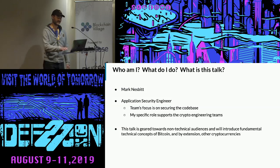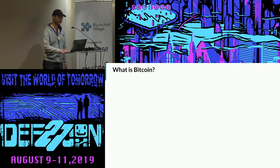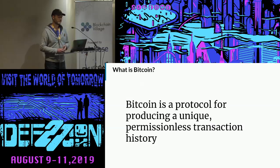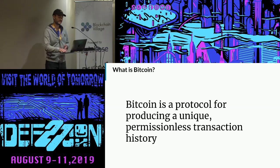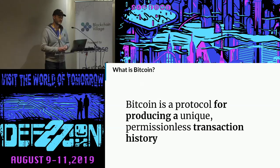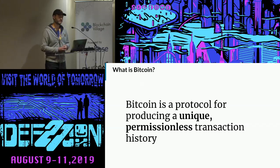Happy to take any questions at the end. So the question: what is Bitcoin? I'm going to provide a definition up front, and we'll spend the rest of the time unpacking that definition and making sure we understand the parts of it. Bitcoin is a protocol for producing a unique permissionless transaction history. We're going to break it down: Bitcoin is a protocol, it produces a transaction history, and the characteristics of this transaction history are that it's unique and permissionless.